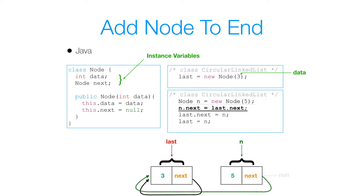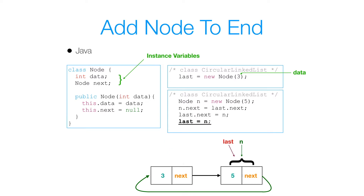Then we set n.next to last.next, so n.next will now reference the first node. Then we set last.next to n, and all we do is move our last to n. And that's how we add a node to the end of this list.